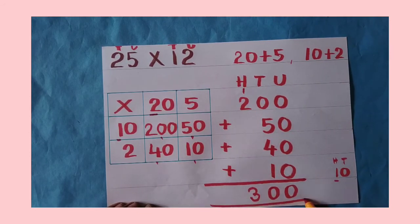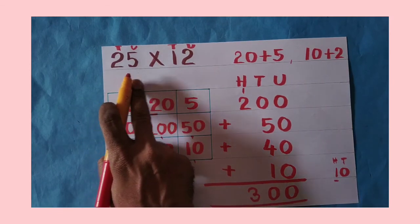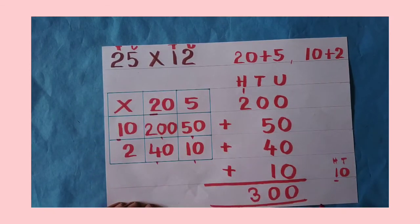So this is the answer. When you multiply 25 into 12, you will get 300.